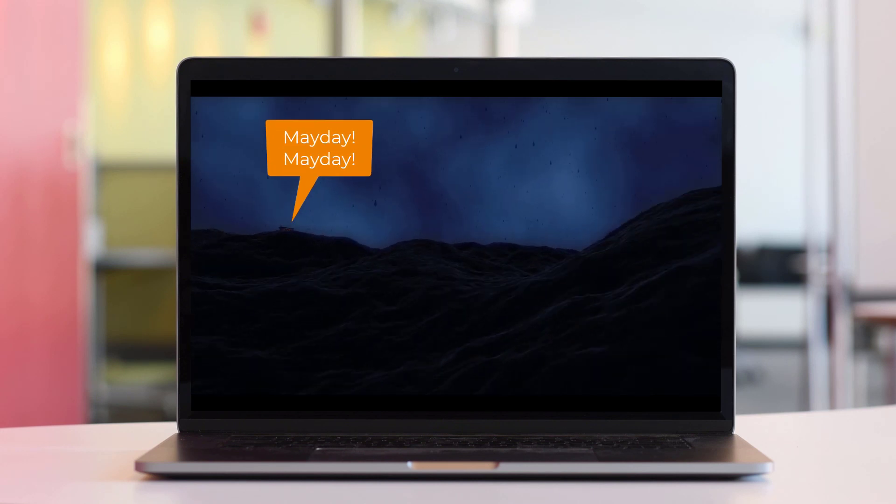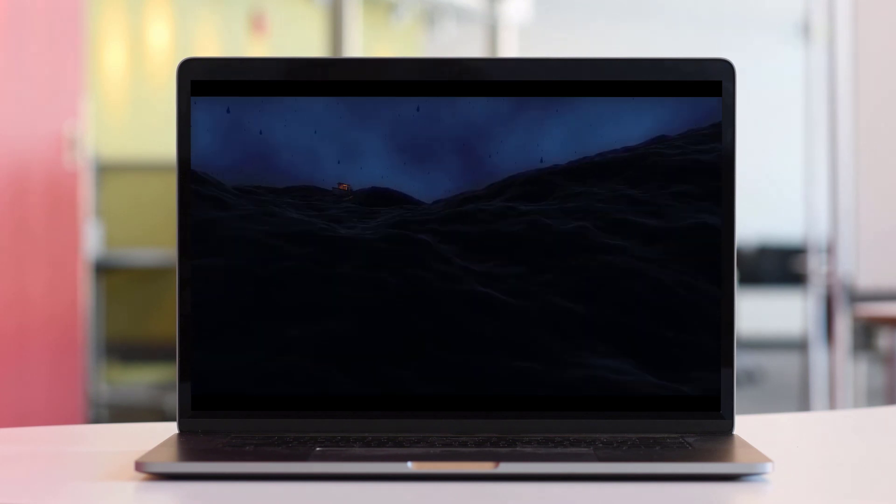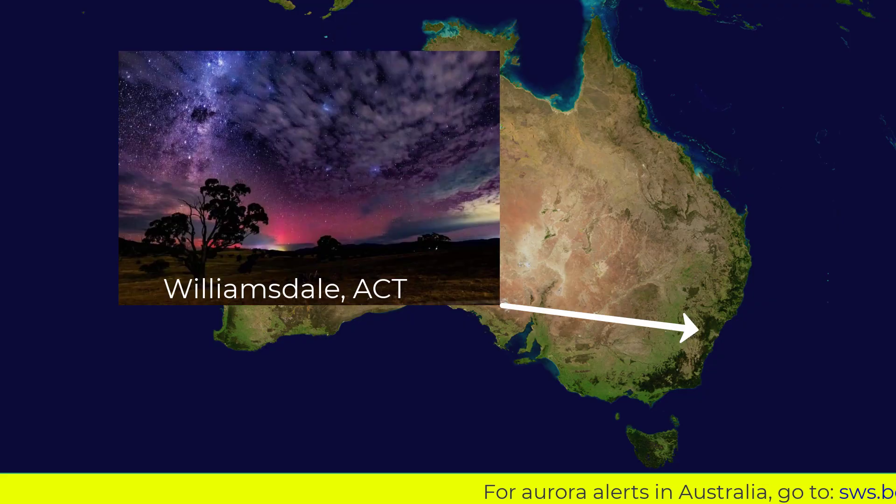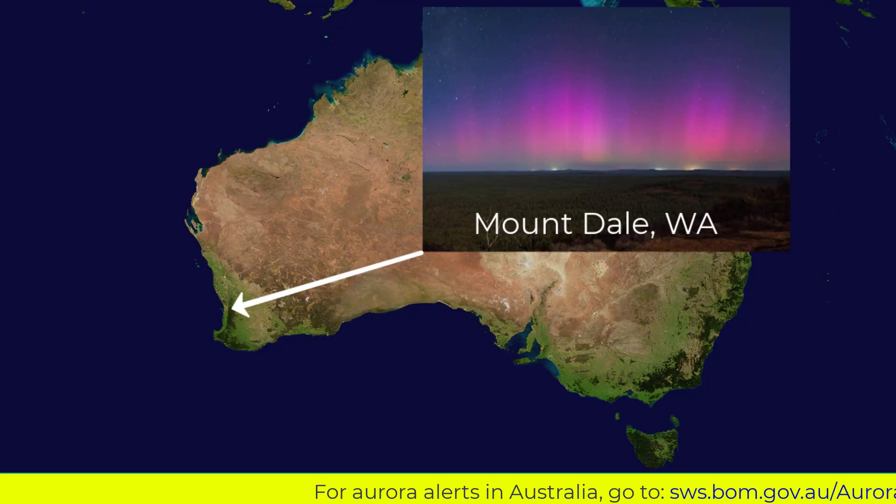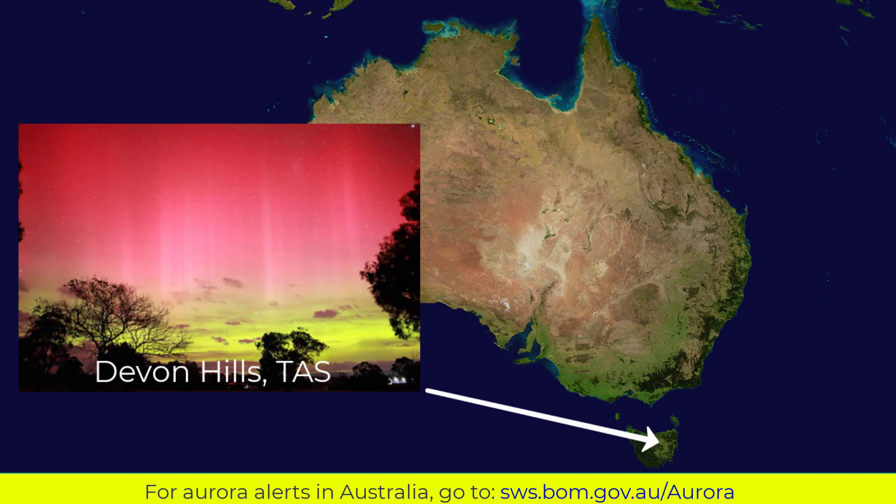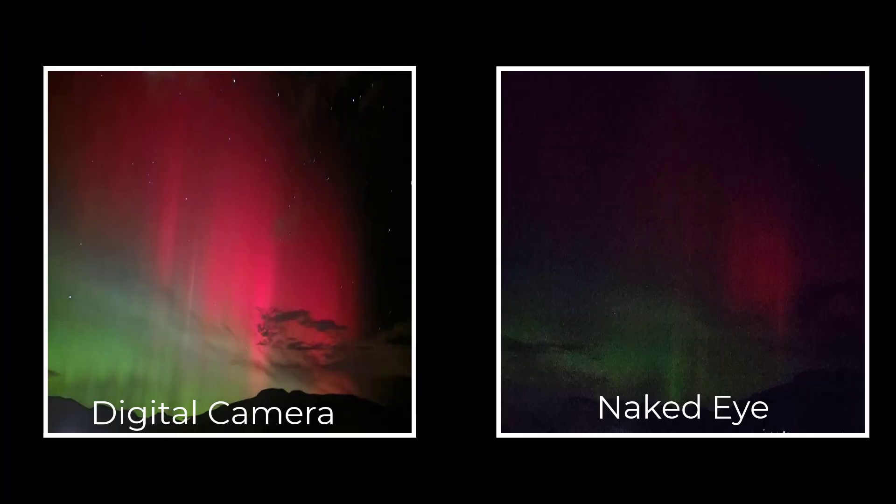So, while solar storms can interfere with satellites, GPS, communications, and power grids, they can also provide stunning auroras, often further from the poles than normal. You might even be able to see one from where you live.